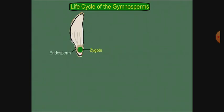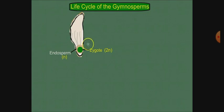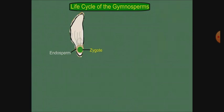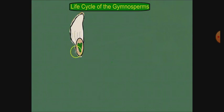The zygote now has endosperm around it, which provides nutrition for its growth. The zygote is diploid and the endosperm is also diploid. Why is the zygote diploid? Because both the egg and the sperm are haploid and they combine. Now the zygote develops, the endosperm is formed, and the seed begins to form.